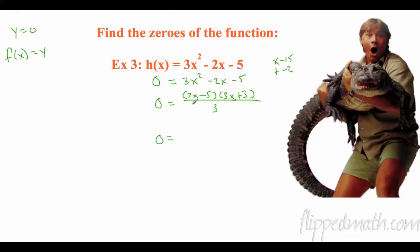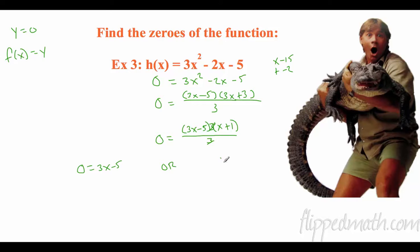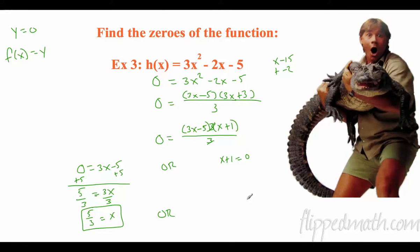Do I have any common factors in 3x and 5? No, so I'm going to keep (3x minus 5). Do I have any common factors in the other group? Yes, so I'm going to divide by 3: (x plus 1). The 3s cancel. So this first factor could equal 0: 3x minus 5 equals 0, or x plus 1 could equal 0. Add 5 to both sides: 3x equals 5, divide by 3 — I'm just going to leave it as a fraction: x equals 5 thirds. Or subtract 1: x could equal negative 1.